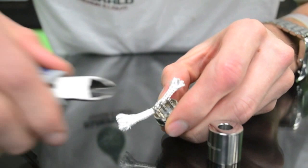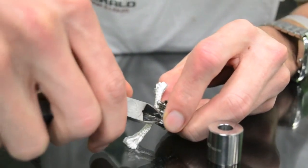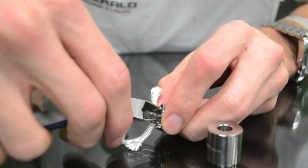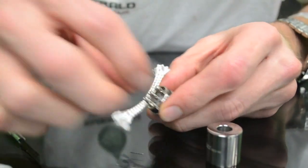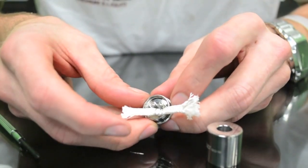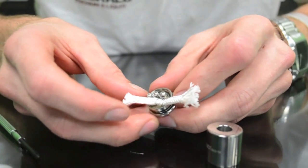Then you can trim off the excess wire. And so your wrap looks like that. That's just on one side.